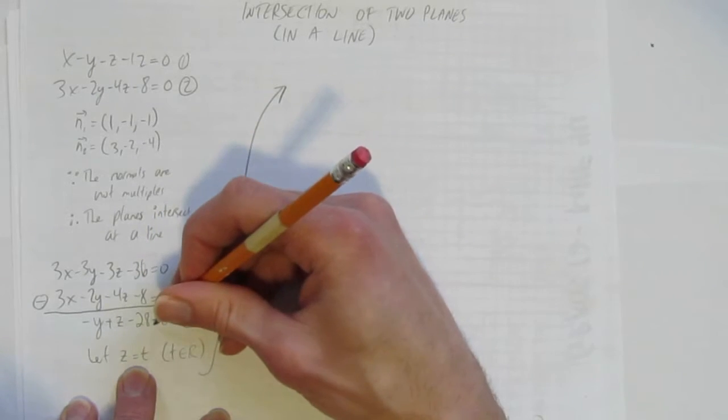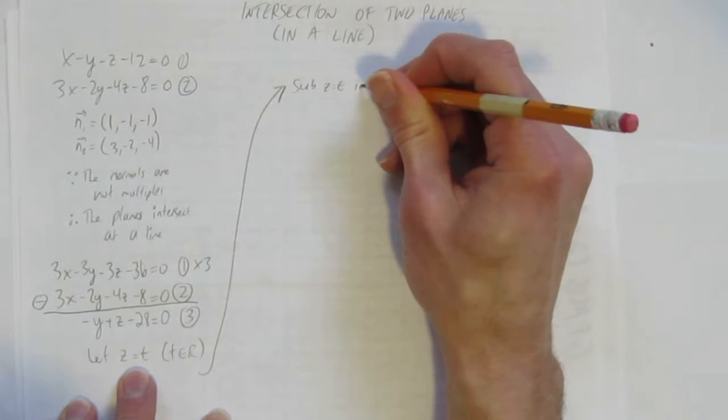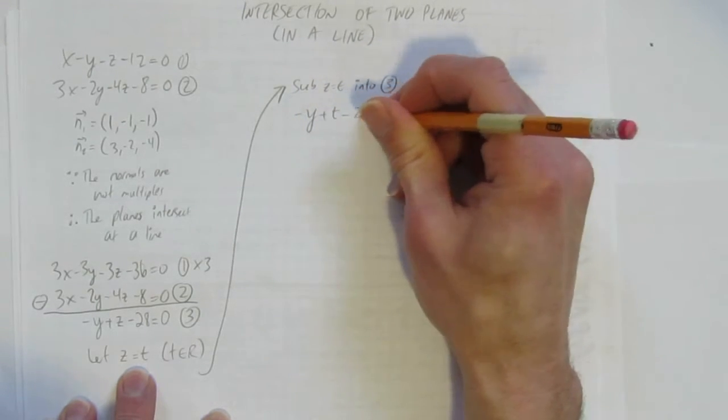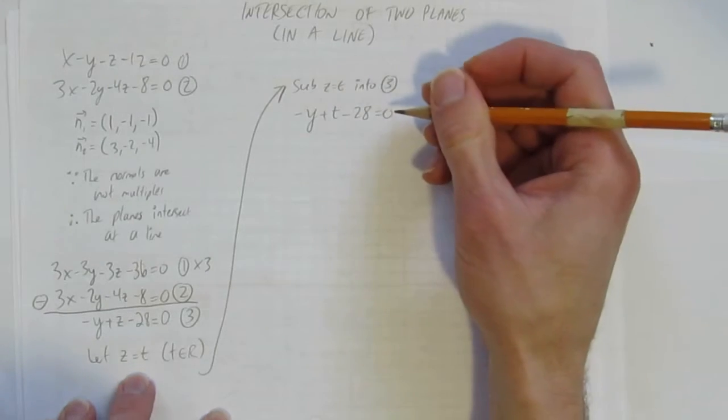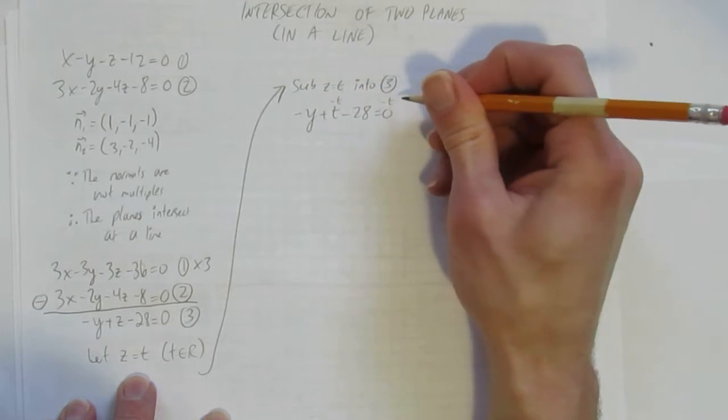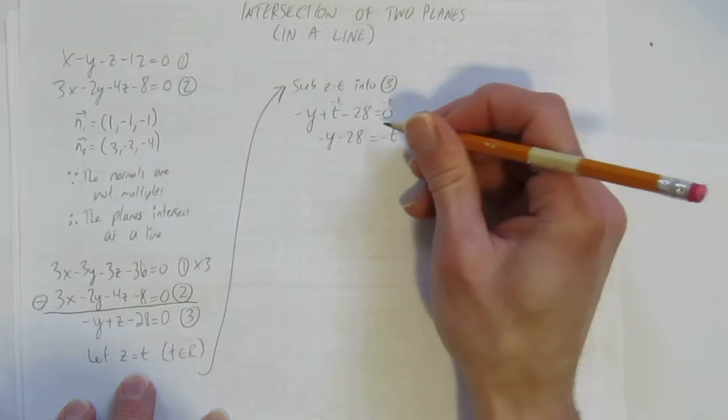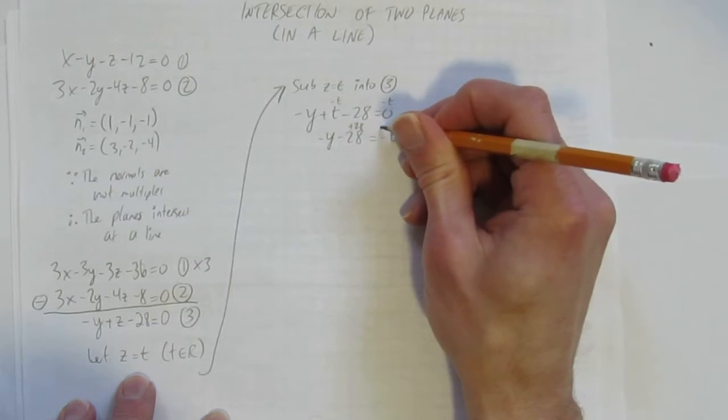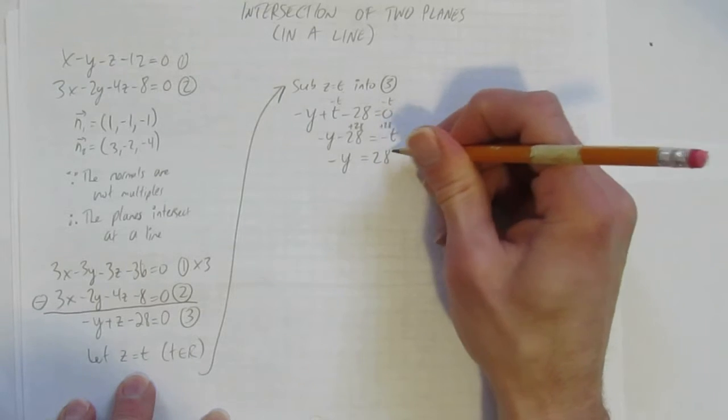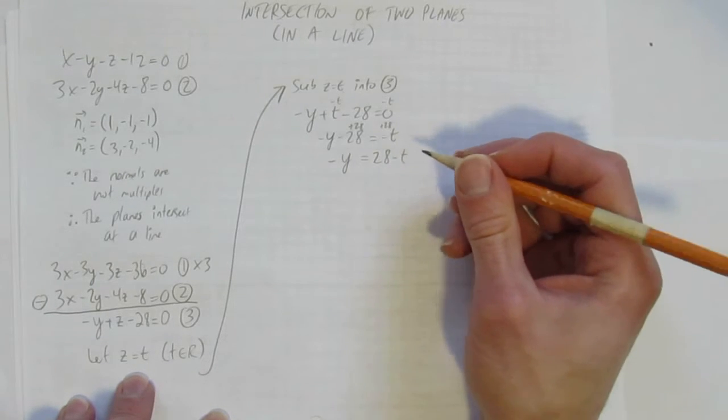Let's continue up here. I've got let z equal t. So into this equation 3, I'm going to sub that in. Sub z equals t into 3, the third equation. So I get minus y plus t minus 28 equals 0. And I'm going to solve for y. Setting up parametric equations, if z is t, let's solve for y. I'm going to move the t over, take away t both sides. You get negative y minus 28 equals negative t. And now I'm going to move the 28 over by adding 28 both sides.